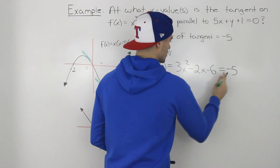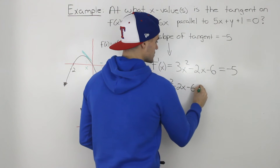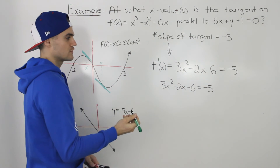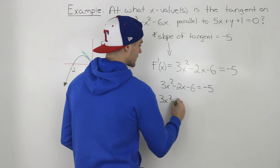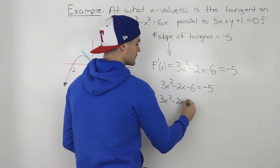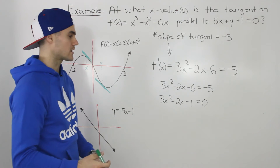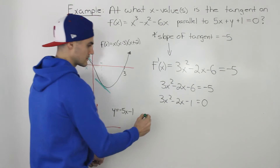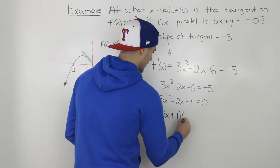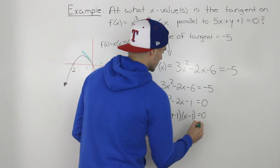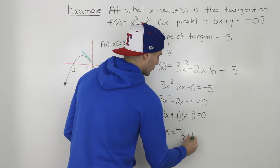So we solve: at what x values does the derivative equal negative five? Bringing -5 over gives 3x² - 2x - 6 + 5 = 0, which simplifies to 3x² - 2x - 1 = 0. This is a quadratic that factors as (3x + 1)(x - 1) = 0, giving x = -1/3 and x = 1.